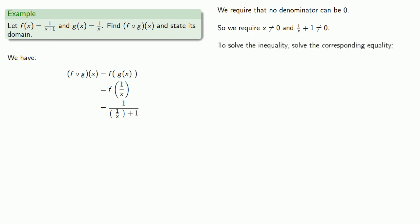Remember to solve the inequality, solve the corresponding equality. Our first inequality is x cannot equal 0, so we'll solve the corresponding equality x equals 0. And since this is the thing that will make a denominator equal to 0, we require that x cannot be equal to 0.